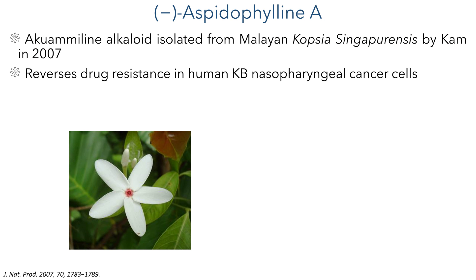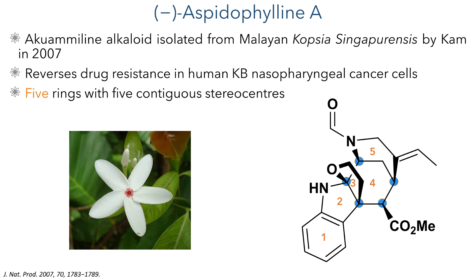Aspidophylline A belongs to the akuammiline family of alkaloids and was first isolated in 2007 from the Malayan Kopsia singapurensis plant. This molecule showed interesting biological activities and was able to reverse drug resistance in human KB nasopharyngeal cancer cells. Structurally this compound is quite a difficult target due to the five connected rings, one of which bears five contiguous stereocenters.